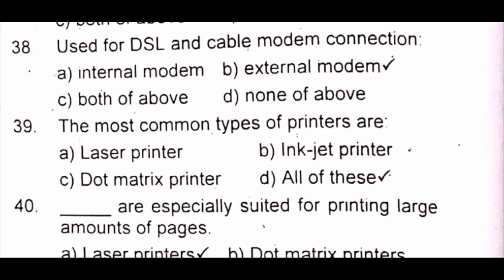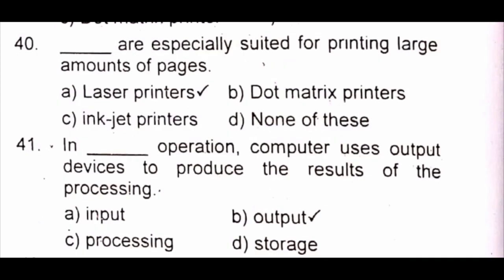Question 39: The most common types of printers are A) laser printer B) inkjet printer C) dot matrix printer D) all of these. The answer is D) all of these. Question 40: Dash are especially suited for printing large amounts of pages. A) laser printers B) dot matrix printers C) inkjet printers D) none of these. The answer is A) laser printers.